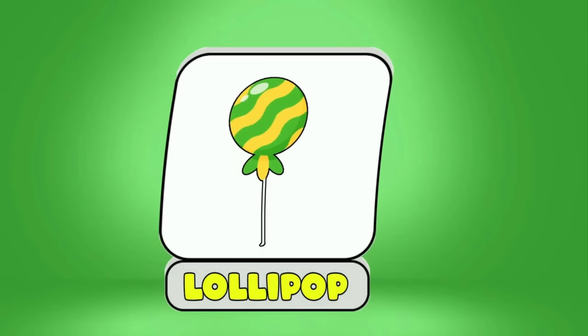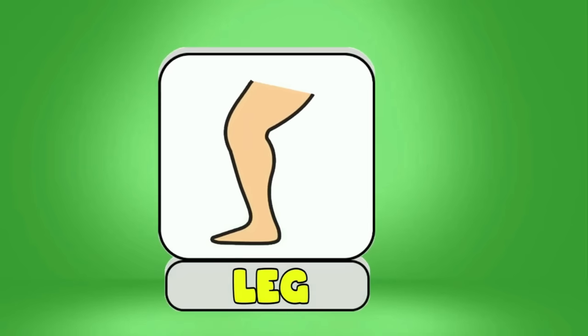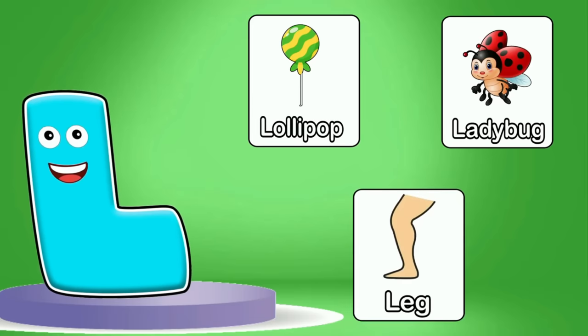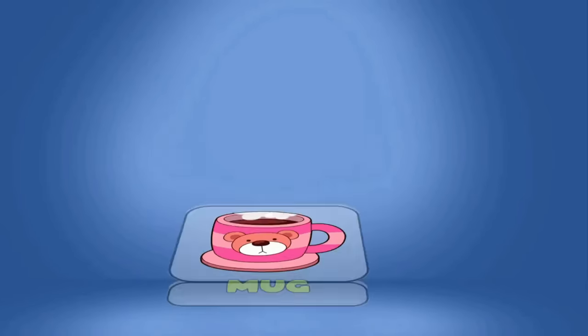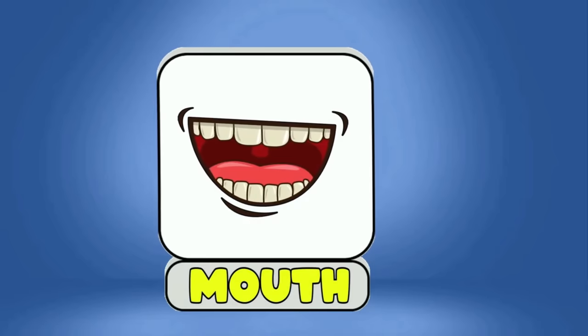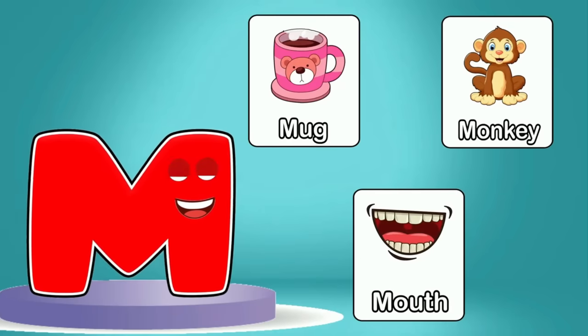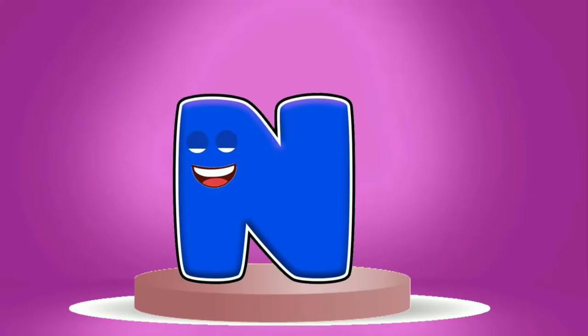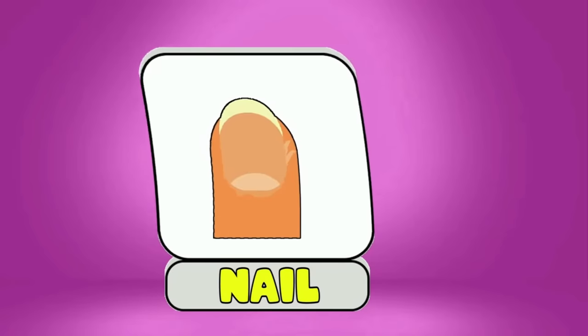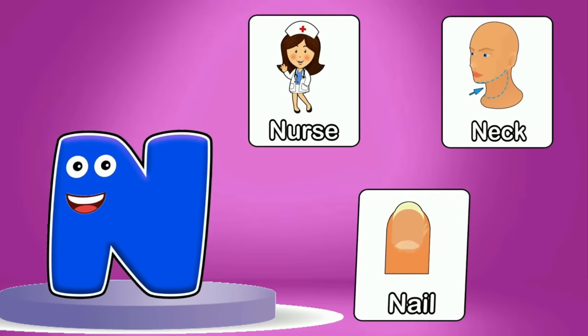This is L. L is for Lollipop, Ladybug, Leg. This is M. M is for Mug, Monkey, Mouth. This is N. N is for Nurse, Neck, Nail.